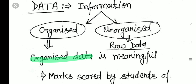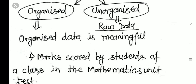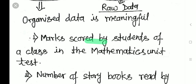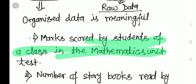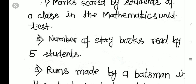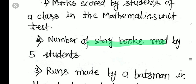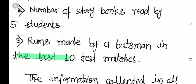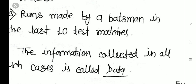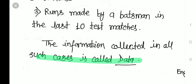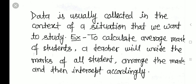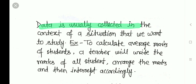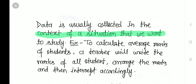For example, consider these three cases: first, collecting the marks scored by students of a class in a mathematics unit test; second, finding out the number of storybooks read by five students; third, the runs made by a batsman in the last 10 test matches. The information collected in all such cases is called data.